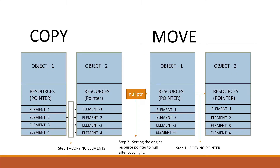Let's understand this better with a diagram. In this diagram we have two options: copy and move. Let's first talk about copy. In copy, we have two objects — object one and object two. As you can see, each object has resources. Resources can be memory, input devices, device drivers, network sockets, or anything else.